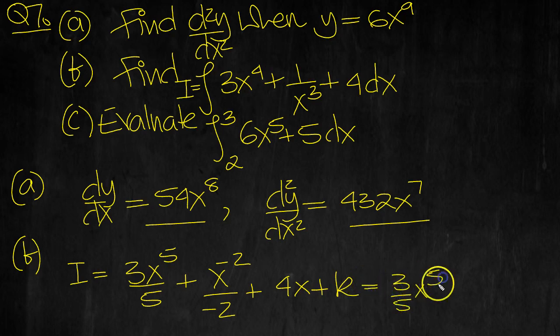Let's tidy it up then. 3/5 x to the 5, minus 1/2, 1 over 2x², we could write if we wish. Drop that down, plus the 4x, plus k, and that's part B.